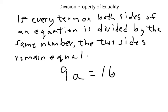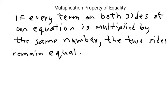So let's suppose we have 9 times the number equals 16. So how would we do this? We would see that we're multiplying. If we would cover up the a, you would just see the multiplication property of equality, very similar to division. If every term on both sides of an equation is multiplied by the same number, the two sides remain equal.